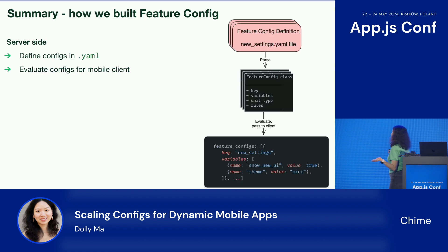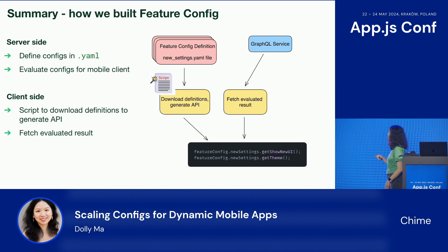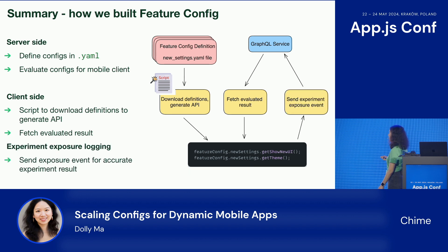Let's take a look at the summary of how we built it. On the server side, we defined all the configs in YAML files, evaluated the configs for the mobile client, and returned the results. On the client side: first, a script to download and generate the API; second, we fetch all the results when the app launches. And lastly, we handle experiment exposure logging — sending the exposure event for accurate experiment results.